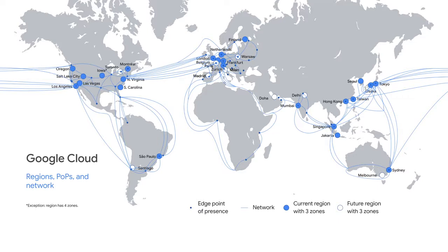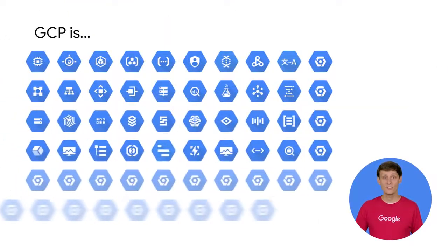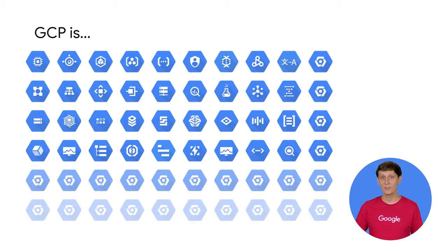This map represents GCP's global infrastructure. As of this recording, GCP's well-provisioned global network connects over 60 zones to over 130 points of presence through a global network of fiber optic cables. And Google is continuously investing in this network with new regions, points of presence, and subsea cable investments.